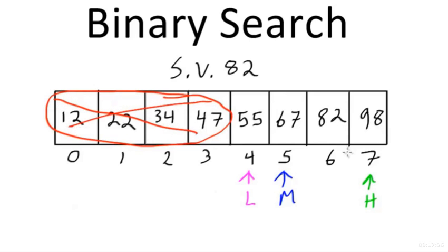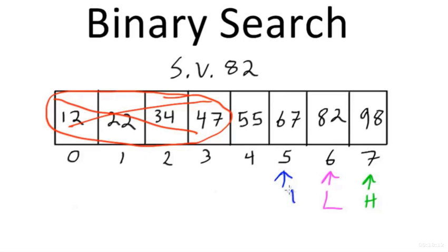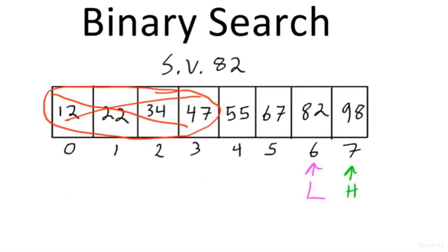The algorithm starts over with mid = 5, where the value is 67. Since 82 > 67, we update low again to mid + 1 = 6. Recalculate: (6 + 7) / 2 = 6 (truncated). Now mid = 6, which equals low. We compare: value at index 6 is 82, which equals our search value of 82 — so we stop our search.